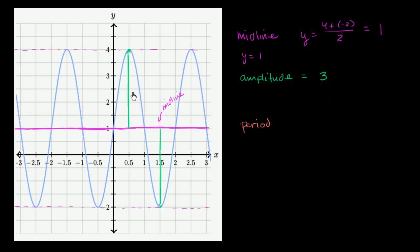So your amplitude right over here is equal to 3. You can vary as much as 3 either above the midline or below the midline. Finally, the period.